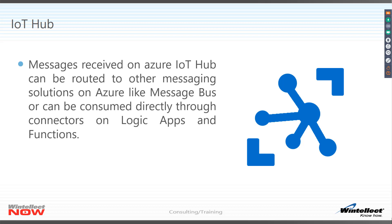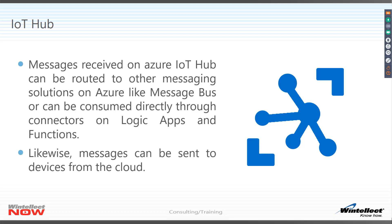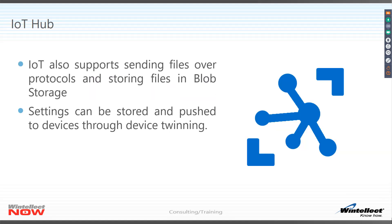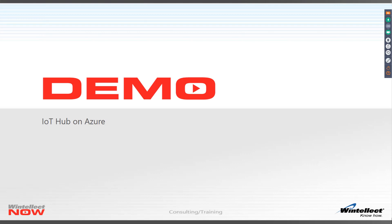Messages received on Azure IoT Hub can be routed to other things on Azure, like Message Bus, and picked up by logic apps and functions. Messages can also be sent down from the cloud. IoT Hub supports sending files, which get uploaded into blob storage. Settings can be stored and pushed to devices through something called device twinning. With all these features — the ability to send files, messages, provision devices, and secure devices — it's one of those things best shown rather than explained, so I'm going to pull up Azure IoT Hub and do a walkthrough.